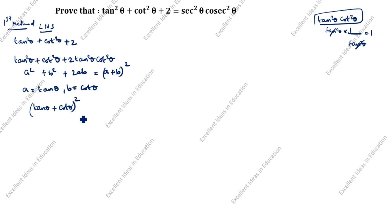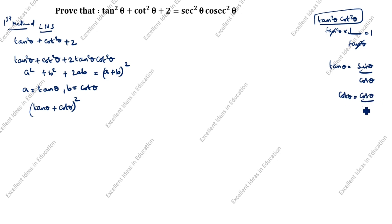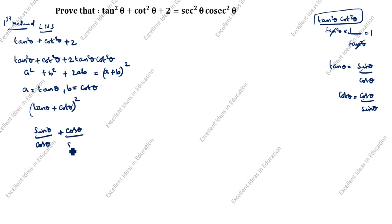What is (tan theta plus cot theta) whole square? How will we split it? Tan theta formula is sin theta by cos theta, and cot theta is cos theta by sin theta. So we get (sin theta by cos theta plus cos theta by sin theta) whole square.